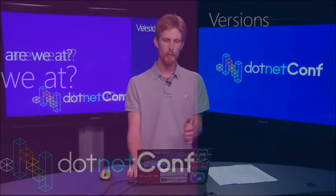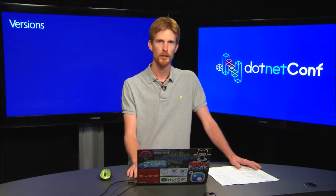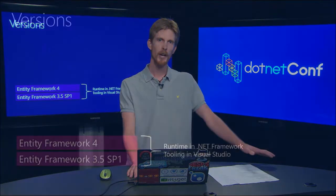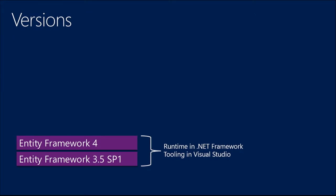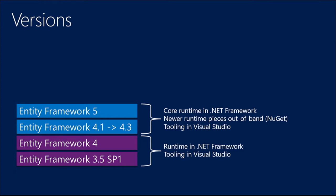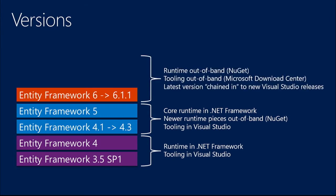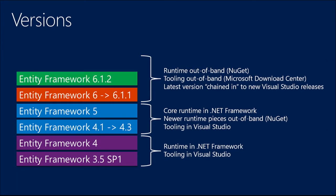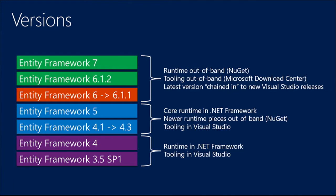EF used to be part of the .NET Framework, strongly tied to it and Visual Studio. For EF4.1 through EF5, we adopted a hybrid model where the core parts were in the .NET Framework but we shipped new parts out of band on NuGet. Starting in EF6 through our latest EF6.1 release, we've been shipping completely out of band on NuGet. The tooling is shipped on Microsoft Download Center, and the latest versions are chained into each Visual Studio release. This is also the model we'll use for 6.1.2 and for EF7.